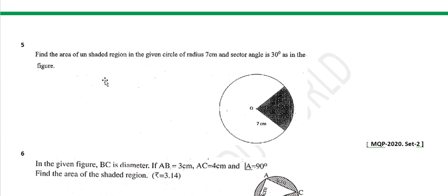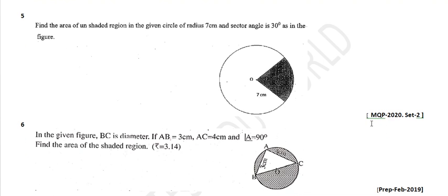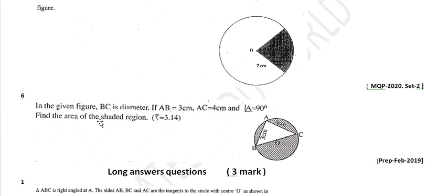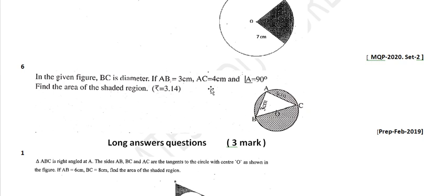Find the area of the shaded region in the given circle of radius 7 cm, where the sector angle is 30 degrees. From model question paper 2020 set 2. In the given figure, OC is the diameter and the angle is 90 degrees. Find the area of the shaded region using the area of the circle and subtracting the appropriate sector area.